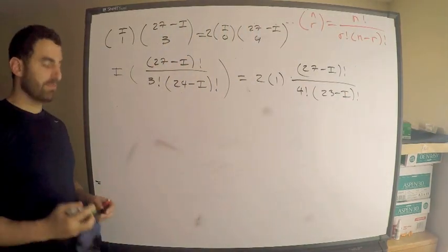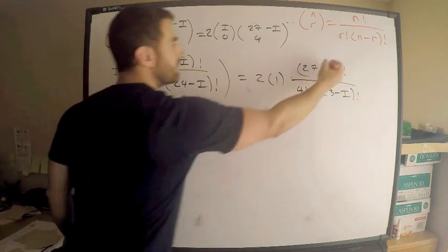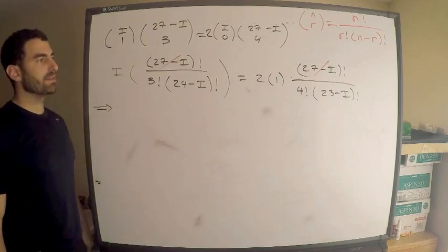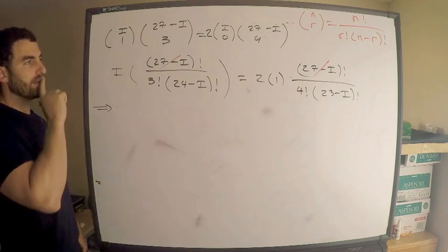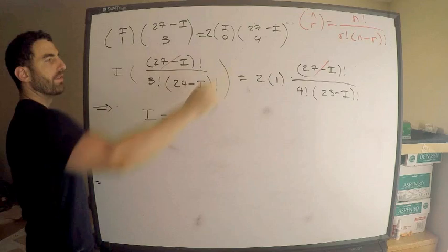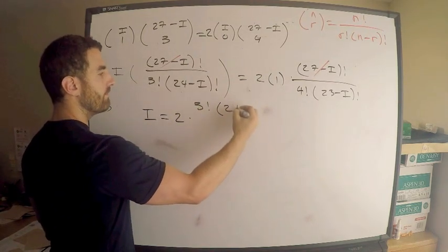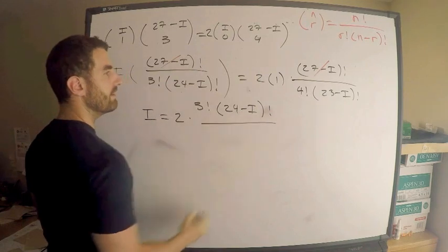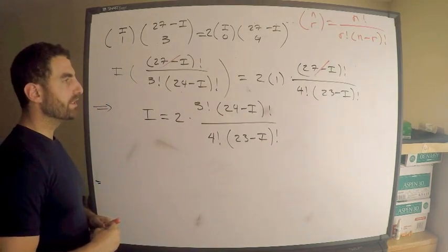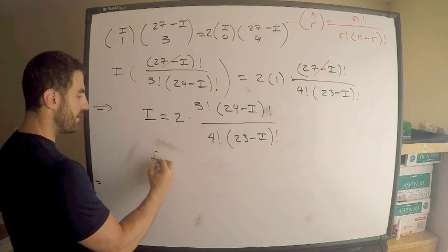Wonderful. Fortunately, some nice things happen here. Immediately, I can get rid of this, which is quite nice. So now, what do I have? I'm going to do a little bit of manipulation here. I'm going to get I by itself. So this tells me that I have the following. I have I is equal to, bring this stuff over there. It looks like it's going to be 2 times 3 factorial times 24 minus I factorial divided by 4 factorial times 23 minus I factorial. 3 factorial is 1 fourth. 2 divided by 4 is 1 half. So I is equal to 1 half.